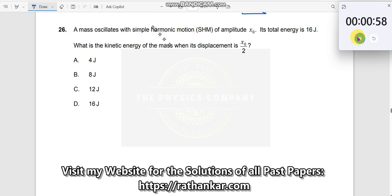Question number 26. A mass oscillates with the SHM of amplitude X0. Its total energy is 16 joules.